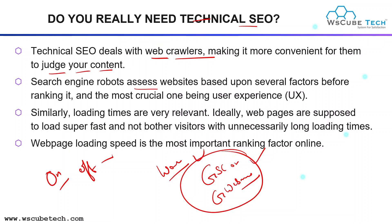Search engine robots access websites based upon several factors before ranking them. The most crucial one is user experience. Similarly, loading time is very relevant — we can also improve your loading time with the help of technical SEO. Web pages are supposed to load super fast, and website loading speed is the most important ranking factor online.